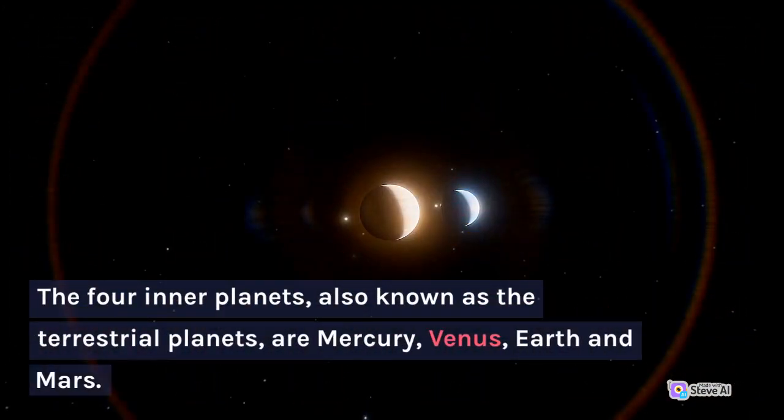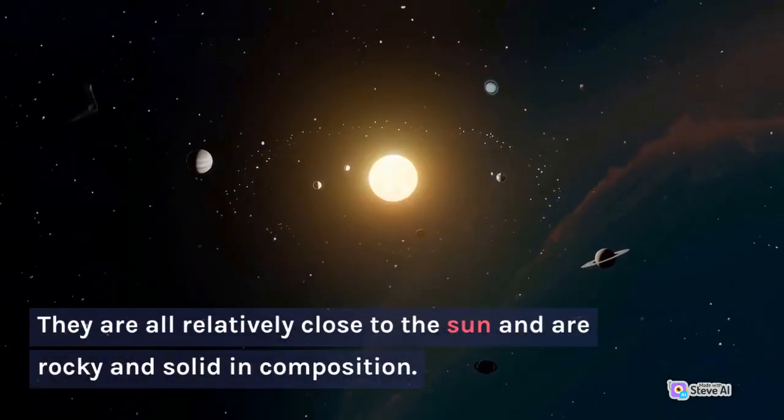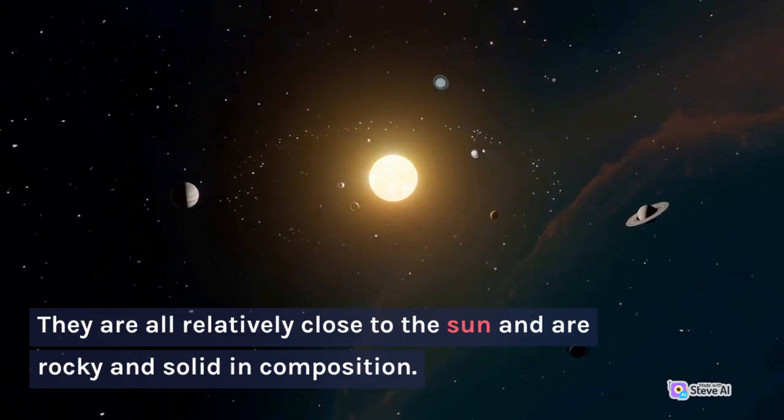The four inner planets, also known as the terrestrial planets, are Mercury, Venus, Earth and Mars. They are all relatively close to the sun and are rocky and solid in composition.